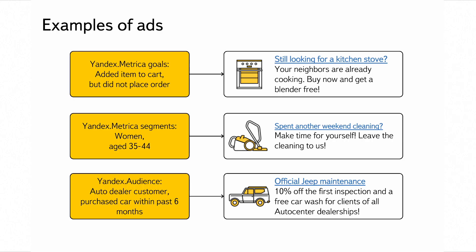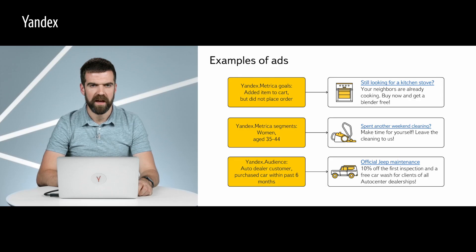Here are several examples of how to appeal to different customers. For goals in Yandex Metrica — for example, a user added an item to a cart but did not place an order — ads for such users should contain a specific call to action: return to the site and complete your purchase. If you use Yandex Metrica segments, you can show relevant products and services to segments based on age and gender. If you are using Yandex Audience segments, you can create a segment of your existing customers and offer them new products or services, like car maintenance for someone who recently purchased a car.